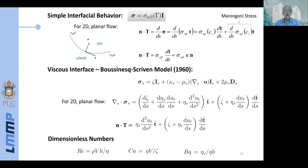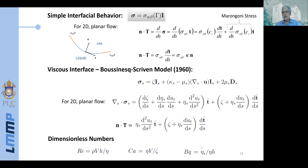Neglecting Marangoni stress gives the usual Young-Laplace equation where liquid stress is proportional to the curvature, acting in the normal direction. For a more complex interface, we use the Boussinesq-Scriven model, where the surface stress has an isotropic component as before but now also includes viscous resistance to both dilatational and shear deformation. This yields tangential and normal components to the interface involving η_s, the total interfacial viscosity, which is the sum of shear and dilatational viscosities. Setting η_s to zero recovers the simple model.